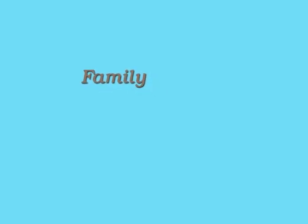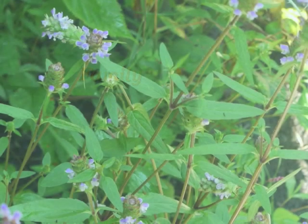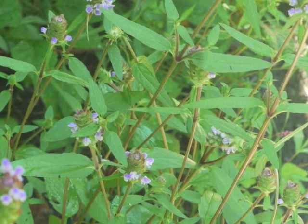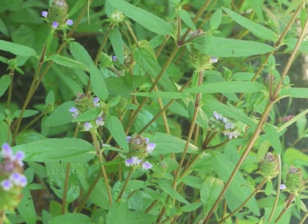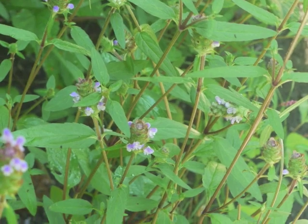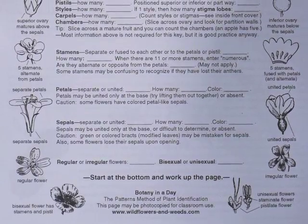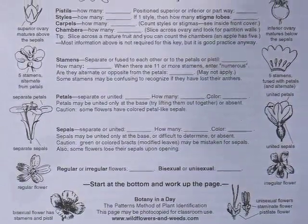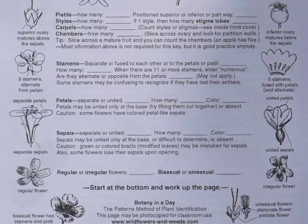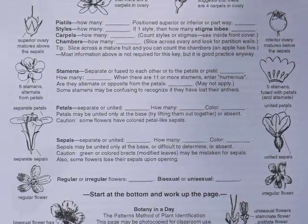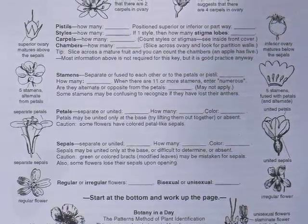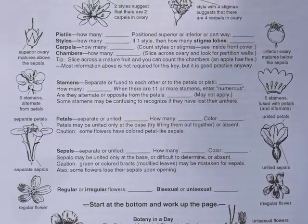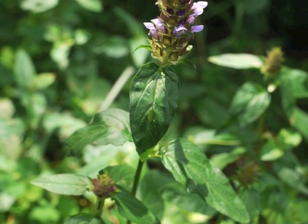For this practice session let's use this plant. Let's begin with profiling it using the chart provided in Botany in a Day. Although we may not have all the answers to the questions asked on the profile sheet, we can at least determine that this is a dicot with showy irregular flowers.